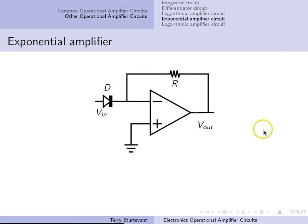For an exponential amplifier, the diode replaces the input resistor, and so now the output is related to the exponential of the input. The output is proportional to minus the exponential of VIN.